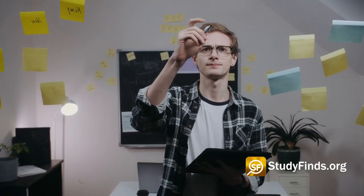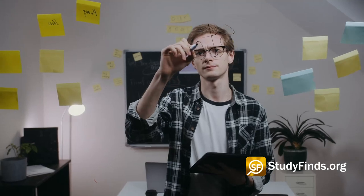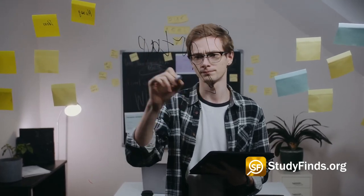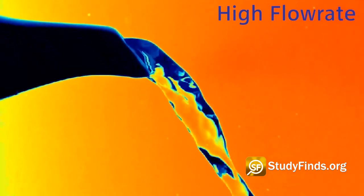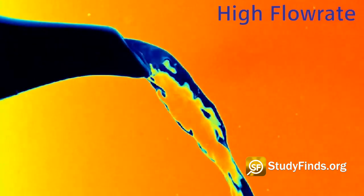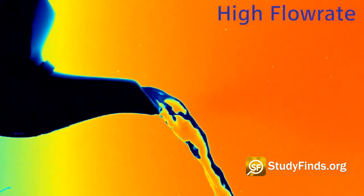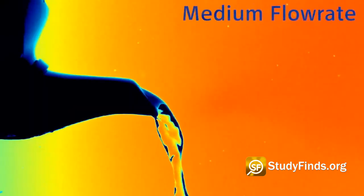Now, scientists have crunched the numbers and come up with a detailed explanation for this deceivingly complicated phenomenon which has been threatening spotless white tablecloths for ages. Researchers carried out experiments where they poured water from a tilted teapot at different flow rates and filmed the results with high-speed cameras. You're seeing it right here.